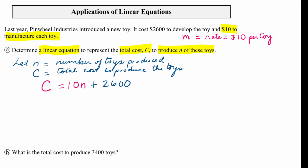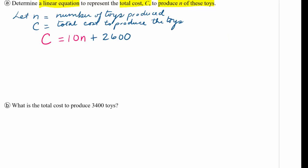Now part B says, what is the total cost to produce 3,400 toys? What is the total cost to produce 3,400 toys means n is 3,400. So to find the cost, we would just substitute 3,400 in where the n is, and use the equation that we found in part A. So our nice linear equation.